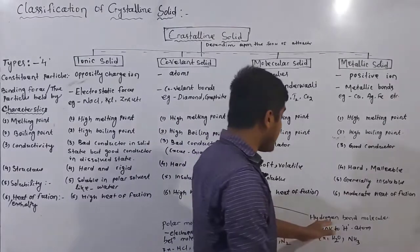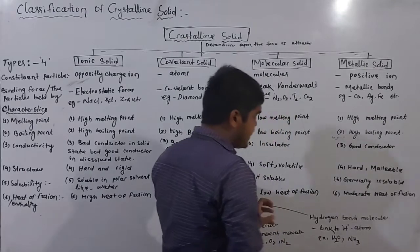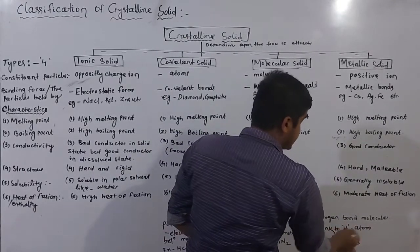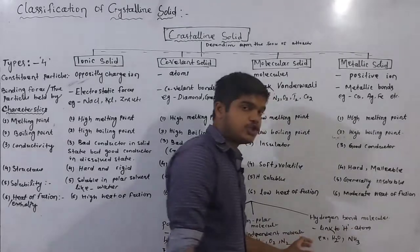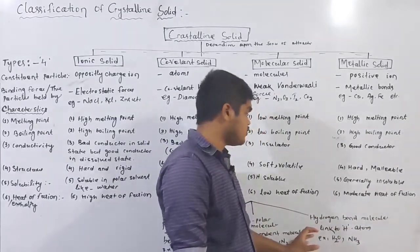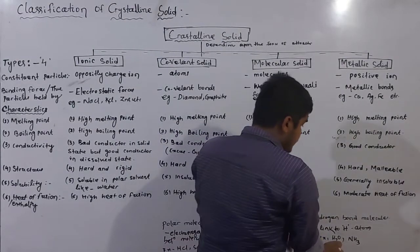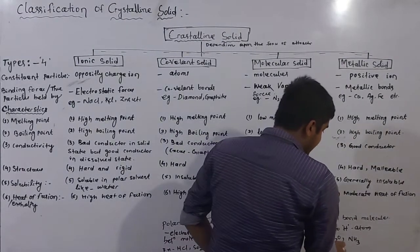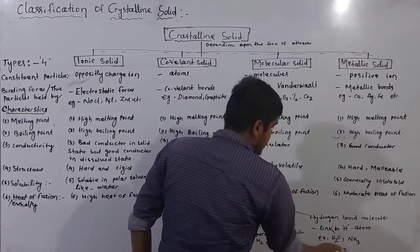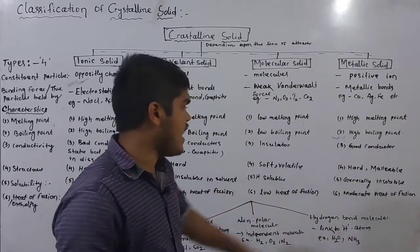Next is hydrogen bond molecules. The constituent particles are linked to hydrogen atoms. For example, H2O and NH3 are hydrogen bond molecules. If we look at H2O, it is connected through hydrogen bonds.